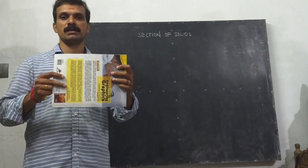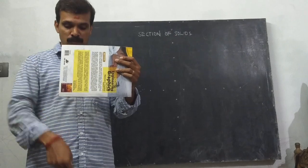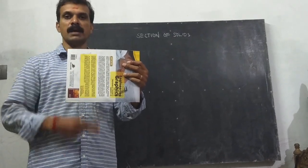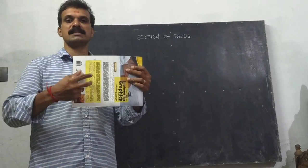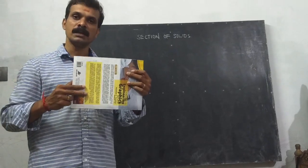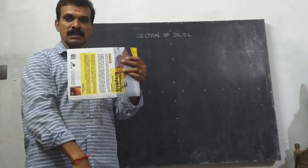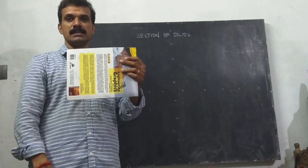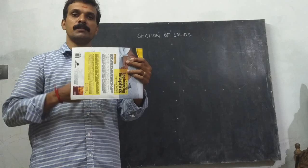Now this is another section plane. What is this section plane? This section plane is perpendicular to HP and parallel to VP. So that for an observer observing from its front can see the entire cut view or the sectioned view of the solid and in the top view, he can see the cutting edge. So this cutting edge will project there and it is called a horizontal trace. So this is a vertical section plane which is perpendicular to HP and parallel to VP.